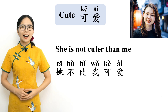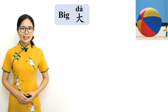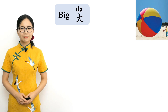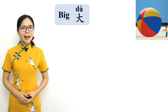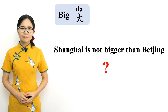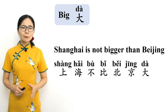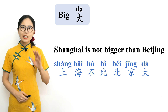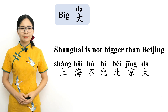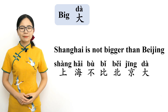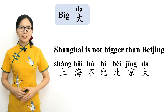The Chinese word for big is 大. Please repeat after me. 大 — big. How do you say 'Shanghai is not bigger than Beijing'? Exactly. 上海不比北京大. Please repeat after me. 上海不比北京大. Shanghai is not bigger than Beijing.